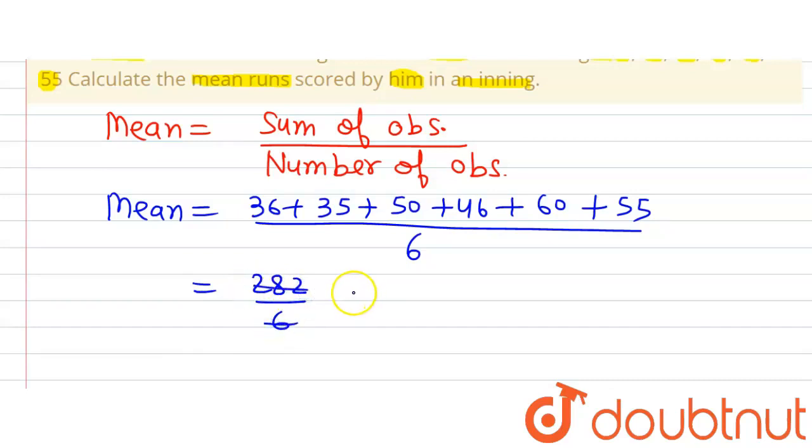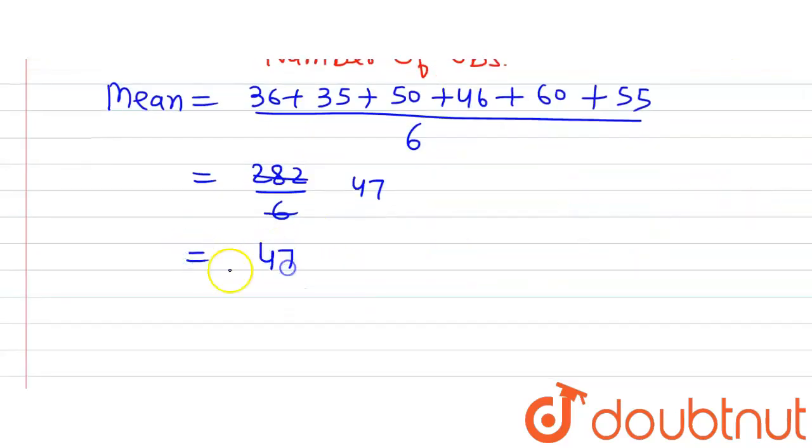So this is the mean score of the batsman in an inning, and that score is 47. And this is what we were supposed to find in the question.